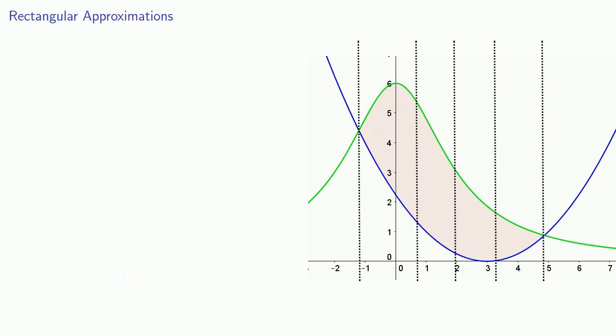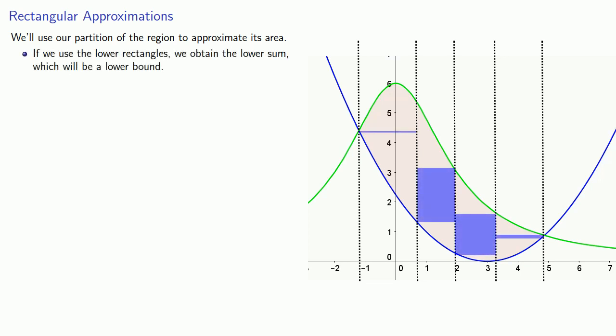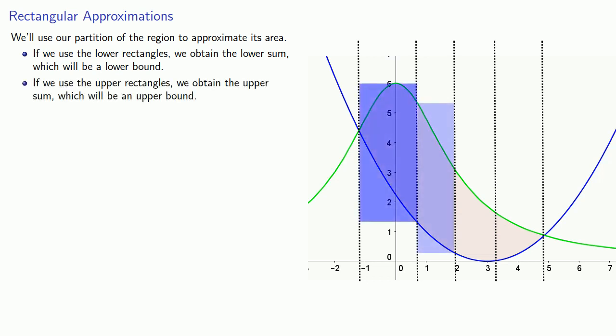Now we have a whole bunch of rectangles whose areas we can determine exactly. And so, we'll use our partition of the region to approximate its area. If we use the lower rectangles, we'll obtain the lower sum, which will be a lower bound for the area. On the other hand, if we use the upper rectangles, we'll obtain the upper sum, which will be an upper bound.